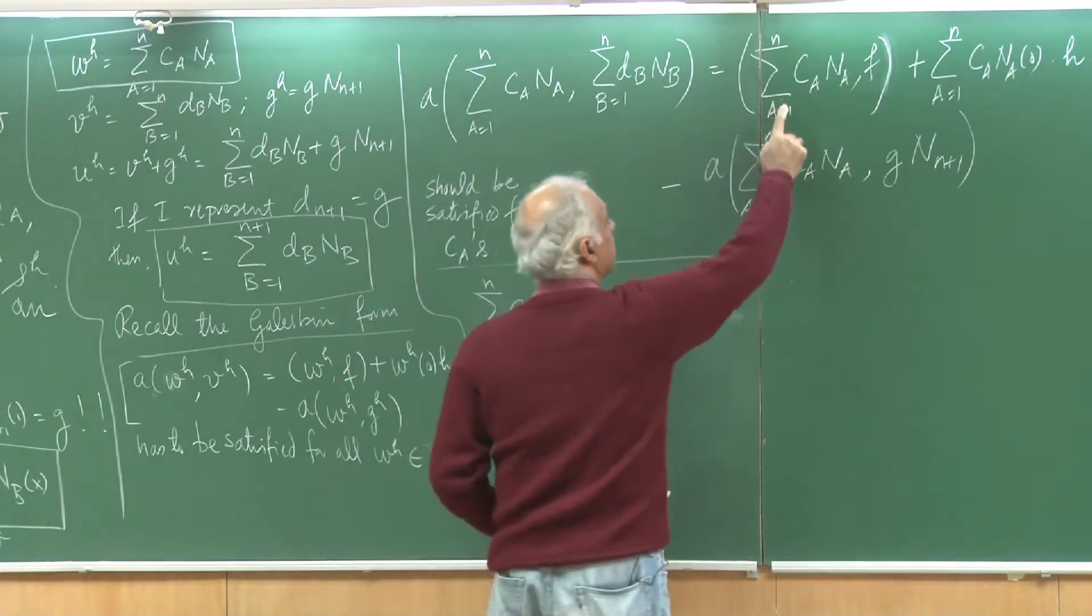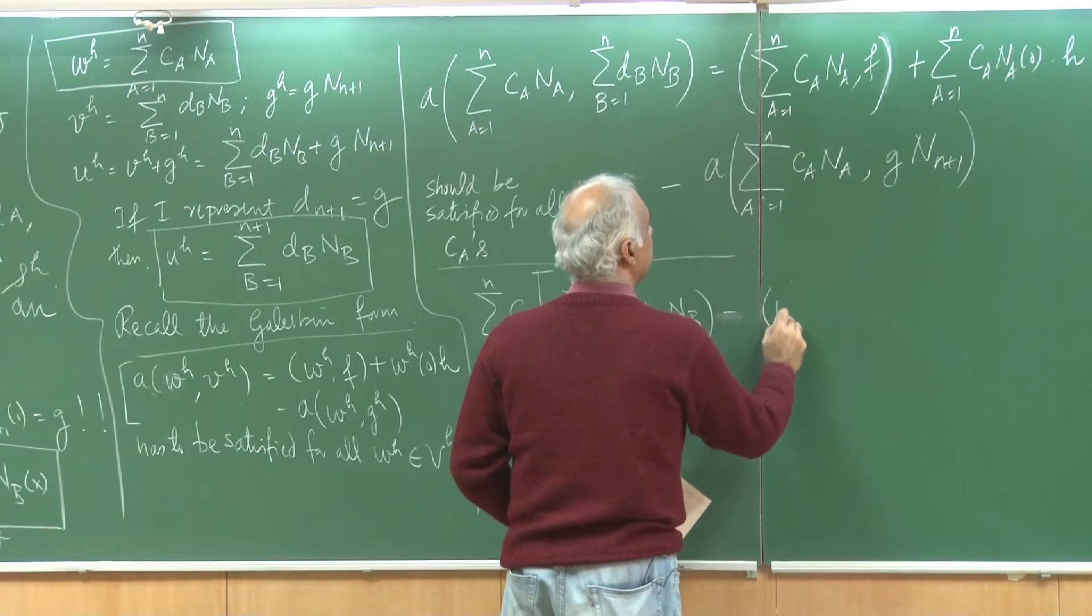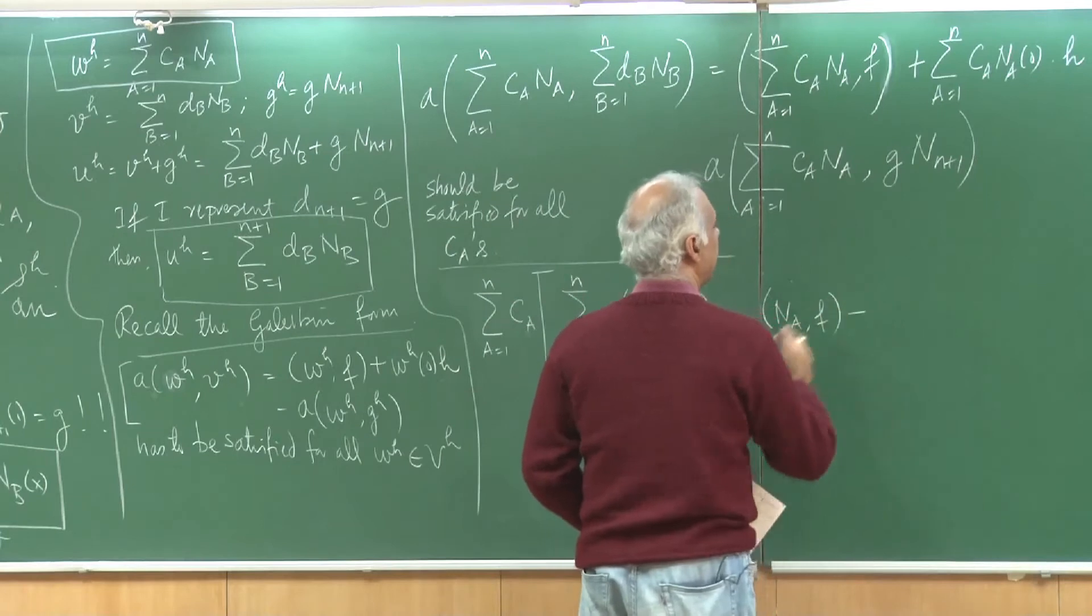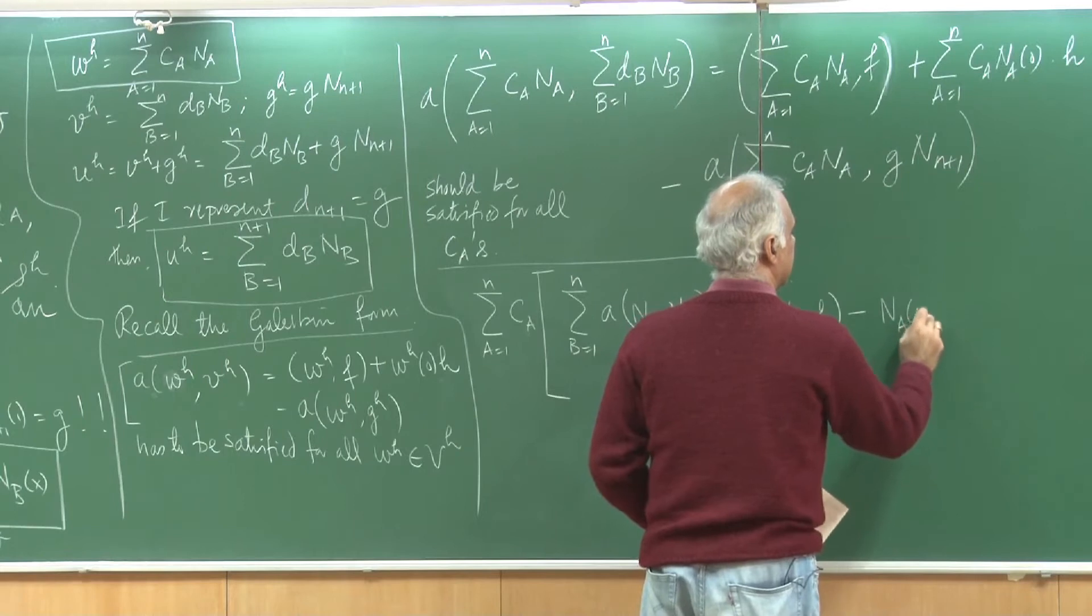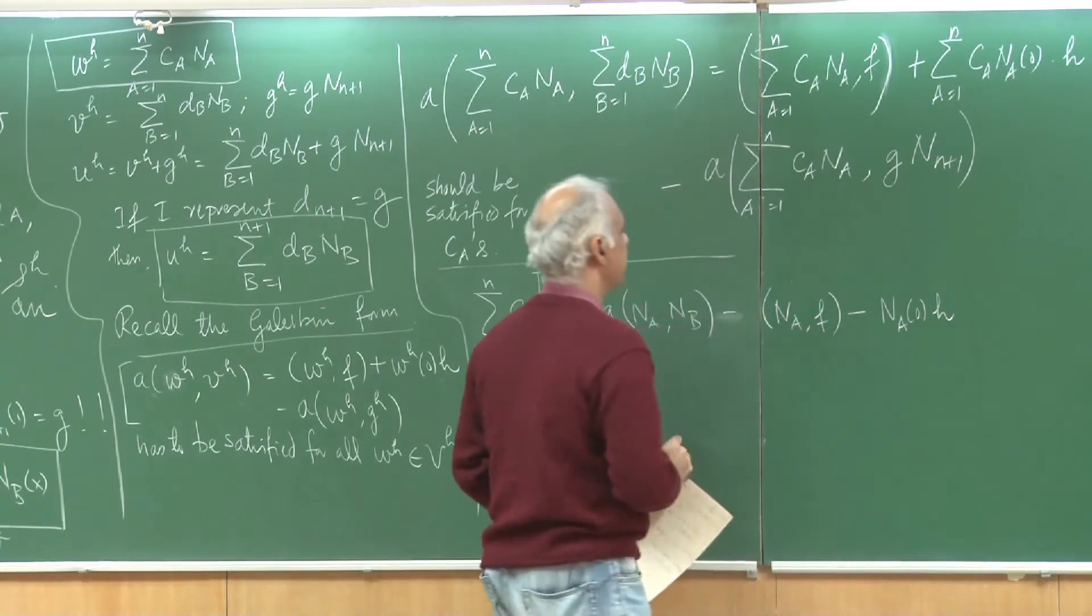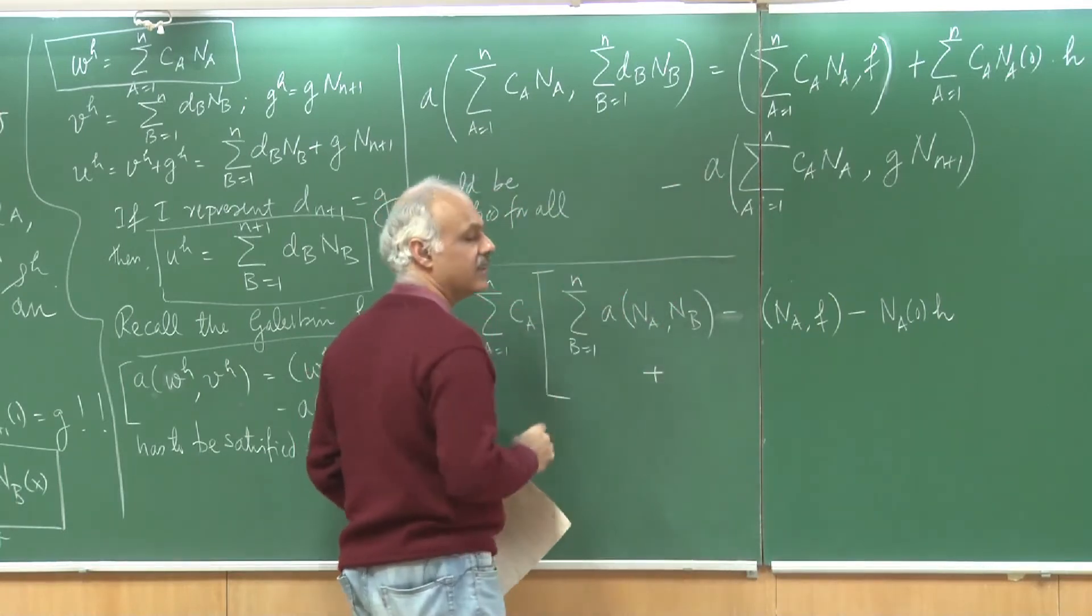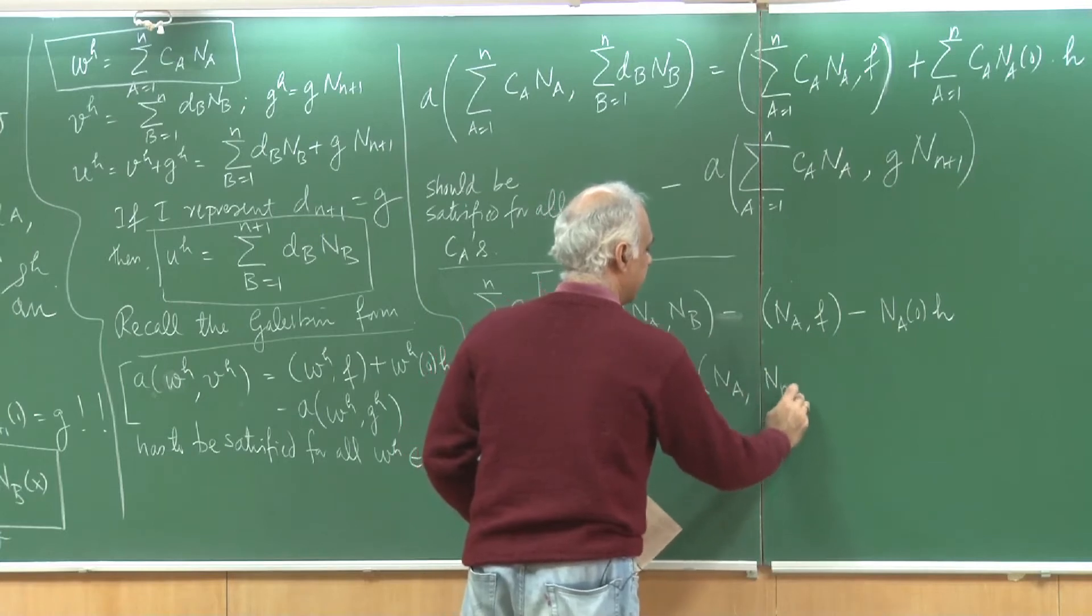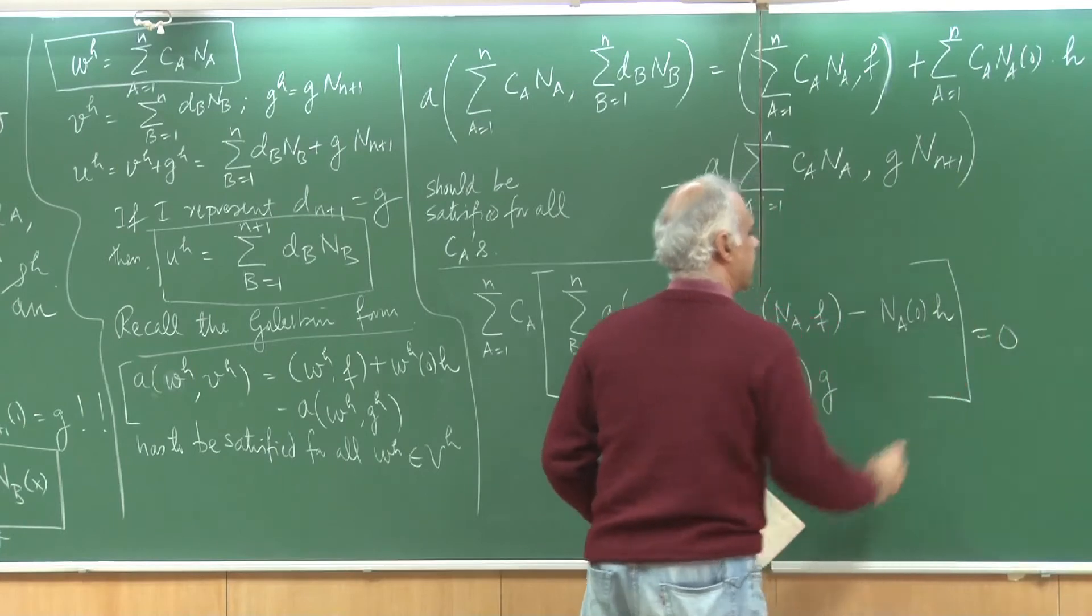This term would I already have summation c_a pulled out and this would become then n_a comma f. The next term would be minus n_a(0) times h and the final term is plus, because I am taking it to the left hand side, a of n_a times n(n+1) times g and this is 0.